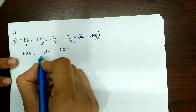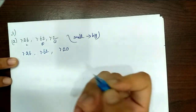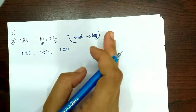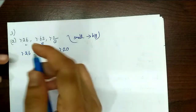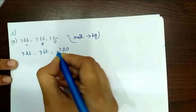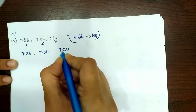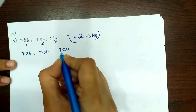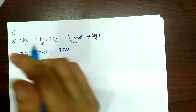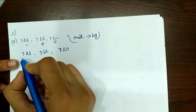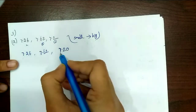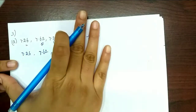We have 7.26, 7.62, and 7.20. First, convert to like decimal fractions, then compare. First, compare the number before the decimal point — here it is 7, 7, 7 — all equal.